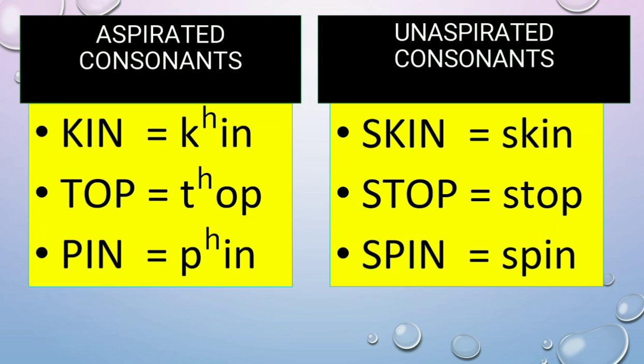Aspirated consonants and unaspirated consonants — let's talk about the difference between both. Kin — aspirated consonant. But skin — unaspirated. Skin. Top. Stop. Pin. Spin.